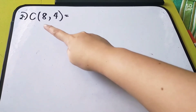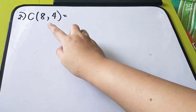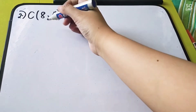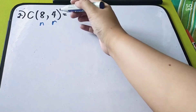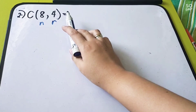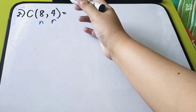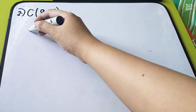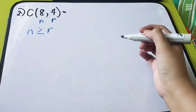Example number 2: we have C(8, 4) — 8 objects taken 4. Here n = 8 and r = 4. Note that n must always be greater than or equal to r, since r is the number you are taking. N must be greater than or equal to r.